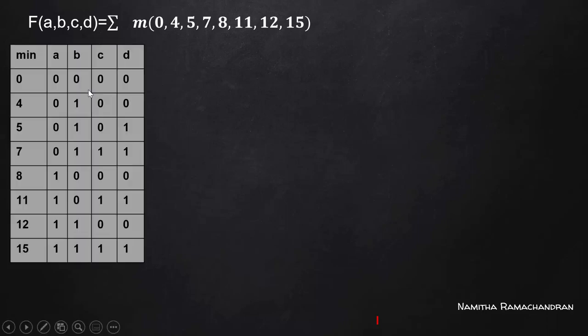We are following the Quine-McCluskey method of minimization. The first step is to identify the binary representation corresponding to these minterms. For example, 0 is 0000, 4 is 0100, 5 is 0101, and so on.